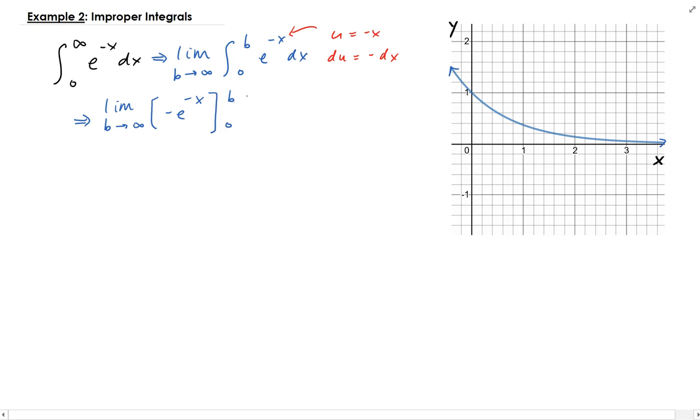Plugging in b and then plugging in zero, we have minus negative and then a negative will give us positive. Let's go ahead and split this up.